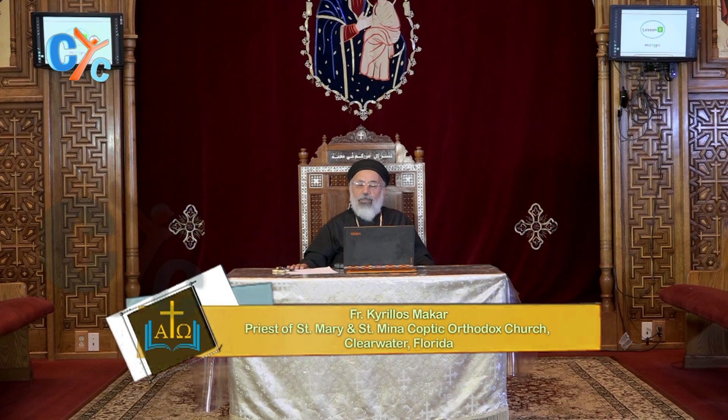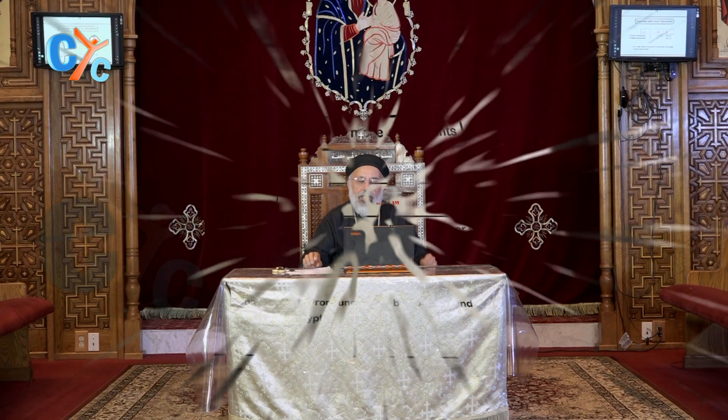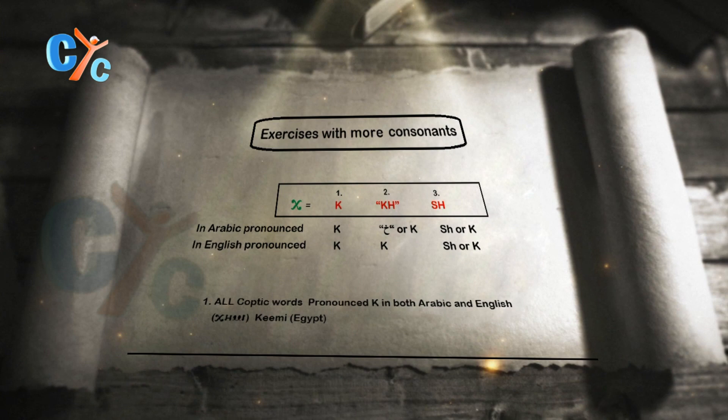The two letters Gamma and XE. In this episode, we saved the most difficult one to the end, which is the K — the letter that looks like an English X. This letter has three possible pronunciations. The first one, the Egyptian pronunciation, is the K, Kappa.